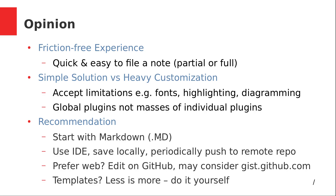My recommendation is to start with Markdown. It's simple and limited — and that's what you want. Use your IDE that you're already using, whether it's for your Terraform, Bash, Python, or whatever. Use the same editor to create your files. Save them locally and periodically push them to a remote repo. Don't get obsessed about always pushing. You want it to be a friction-free, easy experience. Maybe have a script that will push all your updates at the end of the day to the repo.